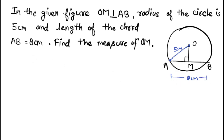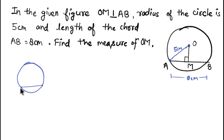Now remember the property of a chord. A chord is a line segment whose endpoints meet at the circumference of the circle. Here, AB is a line segment and both endpoints of AB lie on the circumference of the circle with center O.